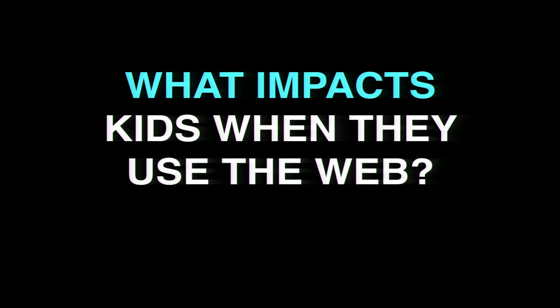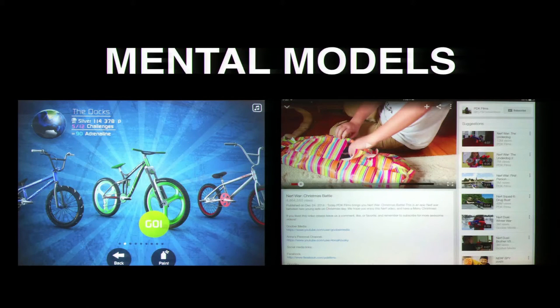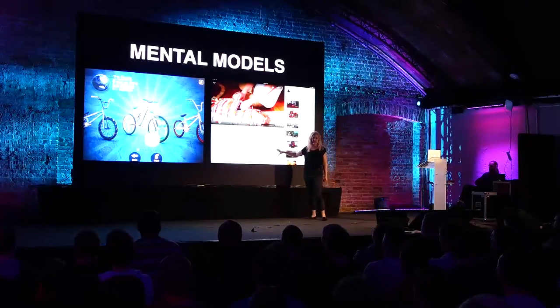So, what impacts kids when they use the web? We know that cognitively they're very different from adults, but there are other factors too. One is their mental models — the mental frameworks that form slowly in their brains based on experiences. The first experiences most kids have with digital interfaces are through a tablet. They mostly use games and the YouTube app; they're not exposed to the browser yet. This shapes their mental models in ways we have to consider when we design for them — these interfaces are full of buttons and images with very little text.